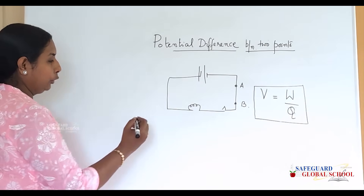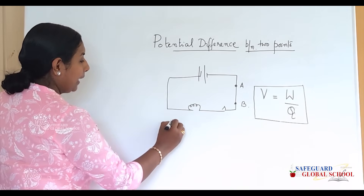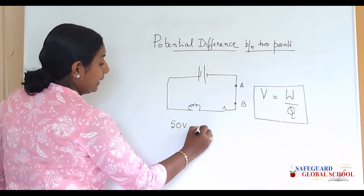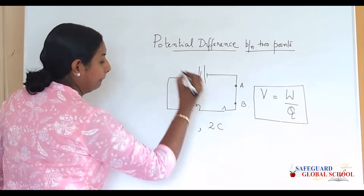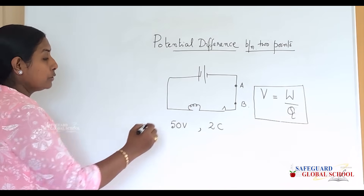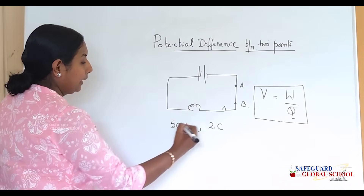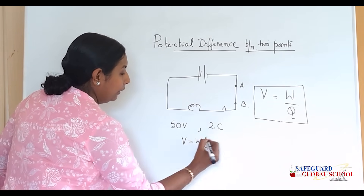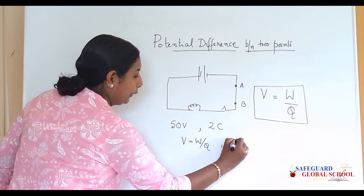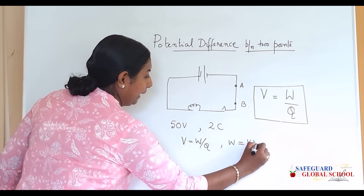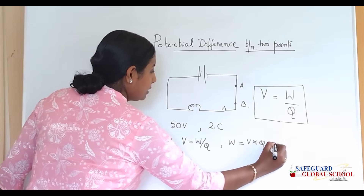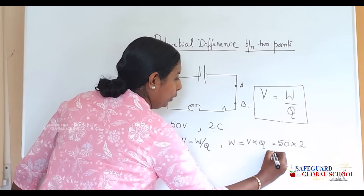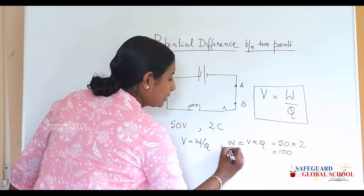Here is a simple numerical example. Suppose there is a battery of 50 volts and it is moving a charge of 2 coulombs. What is the work done? We know that V equals W divided by Q, and we need to find W. So W equals V multiplied by Q. Here V is 50 and Q is 2 coulombs, so 50 times 2 gives us 100.